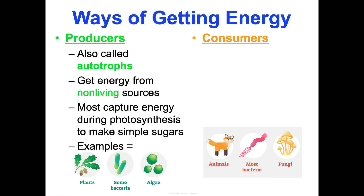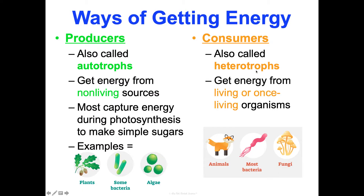You could also be a consumer. These are known as heterotrophs. Hetero means other, trophe means nourish — these are other-nourishers. They get their energy from living or once-living organisms. So when you eat a hamburger, that's a once-living organism — that was a cow. Examples are animals, most bacteria, and fungi.